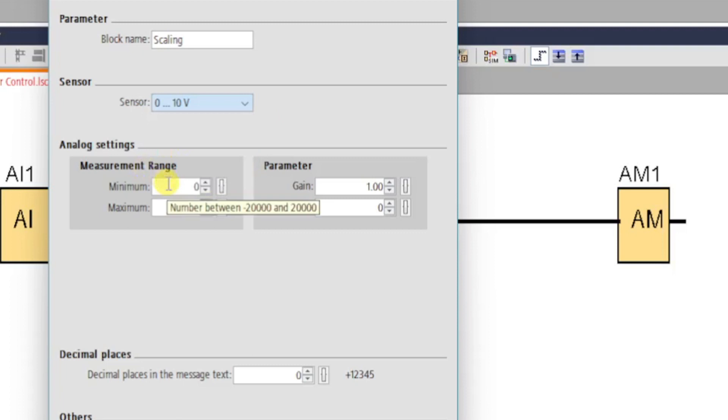If we hover over the input fields, we can see that the measurement range is constrained between minus 20,000 and plus 20,000. The gain is limited between minus 10.00 and plus 10.00, and the offset between minus 10,000 and plus 10,000.